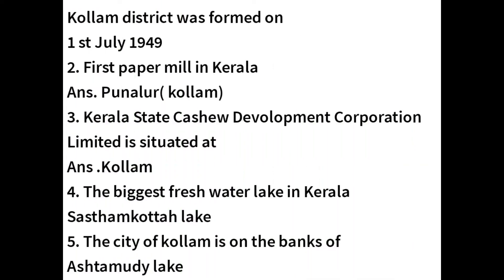We have studied about Kollam district. First: Kollam district was formed on 1st July 1949. Second: the first paper mill in Kerala is Punalur Paper Mill, Kollam. Third: Kerala State Cashew Development Corporation Limited is situated at Kollam. Fourth: the biggest fresh water lake in Kerala is Shastamkot Lake. Fifth: the city of Kollam is on the banks of Ashtamudi Lake.